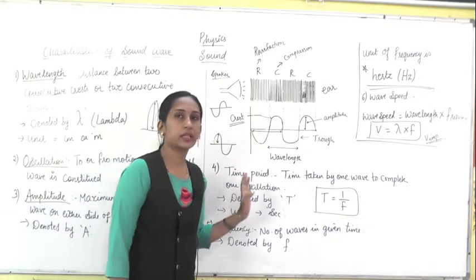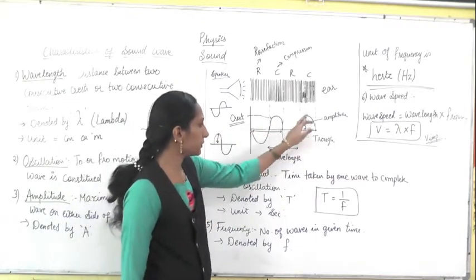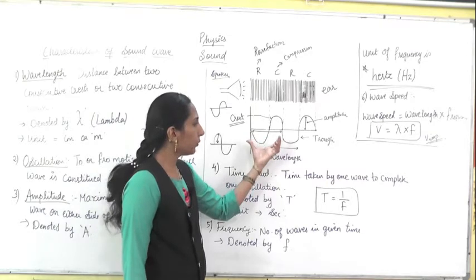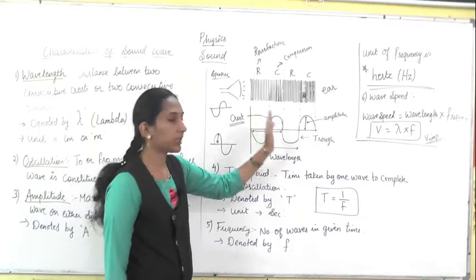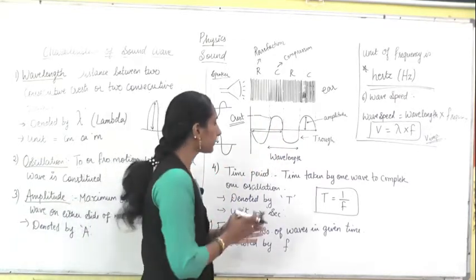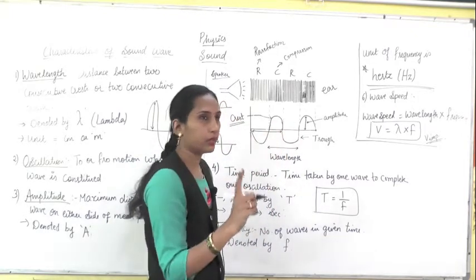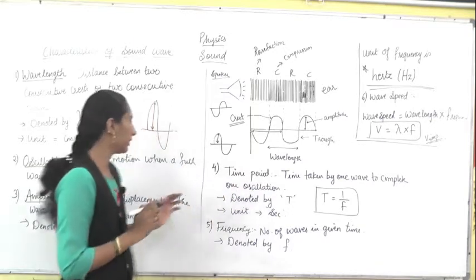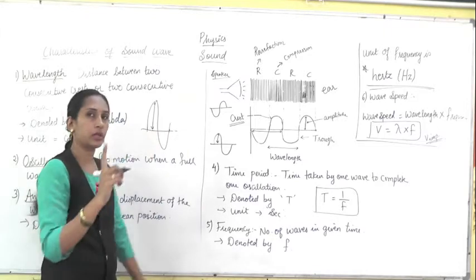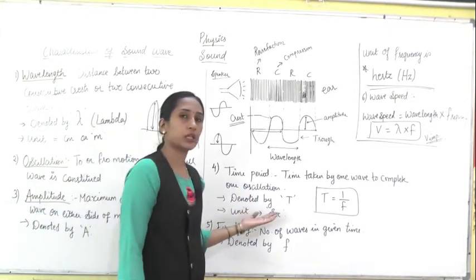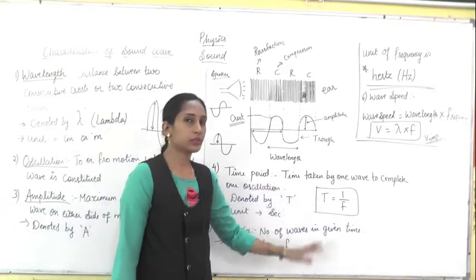The fourth characteristic is time period. It is simple — the time taken by one full wave to complete is called the time period. One full wave — how much time is required to complete that wave? That is the time period. It is denoted by letter T and the unit is second.